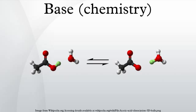In the more general Bronsted-Lowry acid-base theory, a base is a substance that can accept hydrogen ions, otherwise known as protons. In the Lewis model, a base is an electron-pair donor.